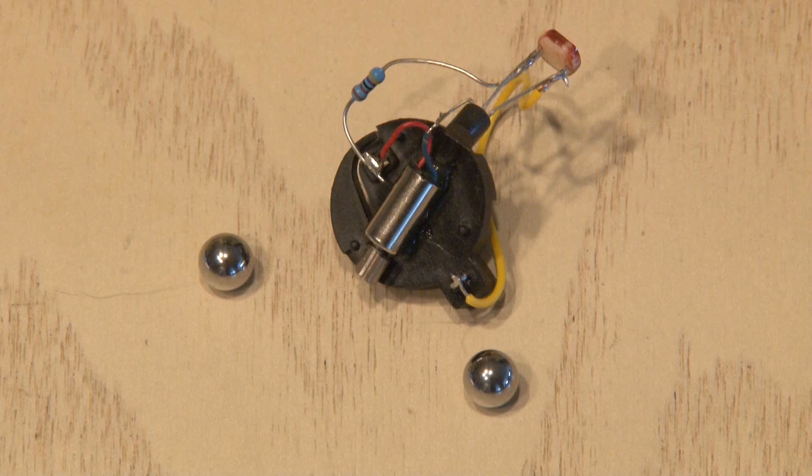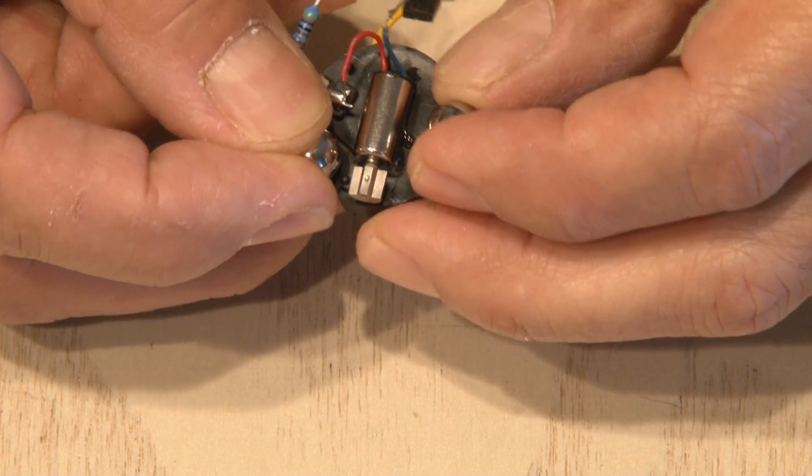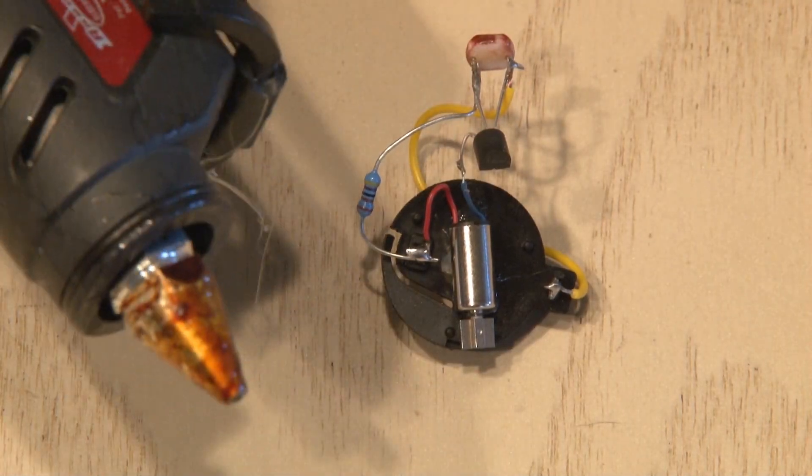The ones I'm using are 5 sixteenths inch in diameter. You're going to want to mount the ball bearings on the opposite sides of the motor. Make sure they don't come in contact with the motor weight. The jitterbug is done.